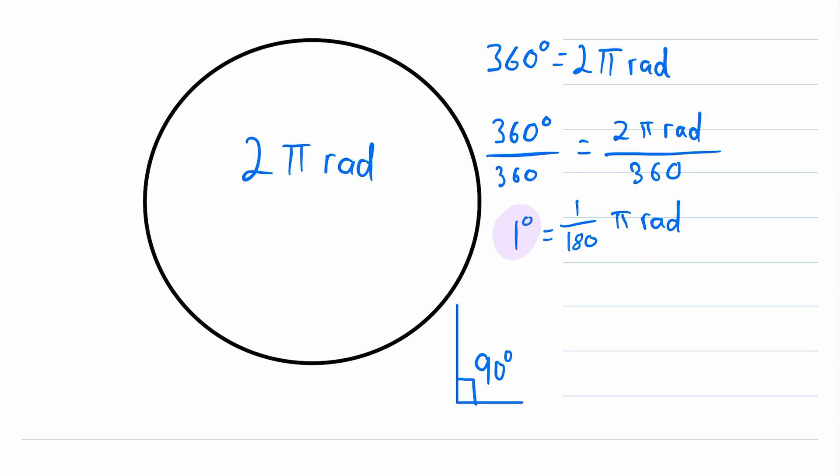Because that will give us 90 degrees over here on the left, and it will tell us what that's equal to in radians on the right. Multiply both sides by 90, we get 90 degrees is equal to 90 divided by 180 pi radians. And of course, 90 over 180 is equal to one half. So this is equal to one over two pi radians. So there you go, 90 degrees is equal to one half pi radians.